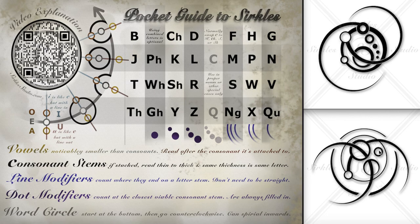And then we have another O, just like that O. And then we have another big consonant in the same position — a circle inside the word circle — and it has one, two, three lines ending on it, so that would be an M. And then we have another I, with a line going towards the middle. So N-O-M-I.